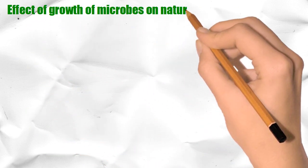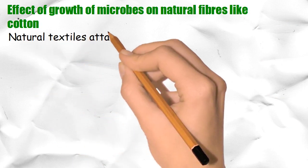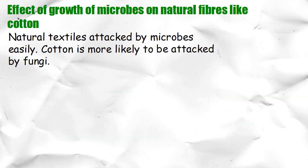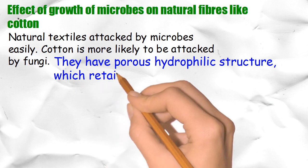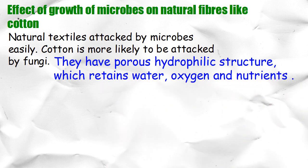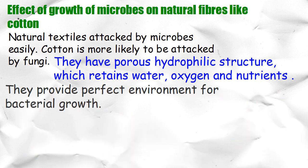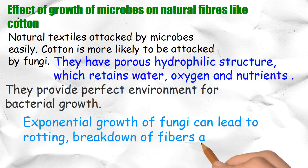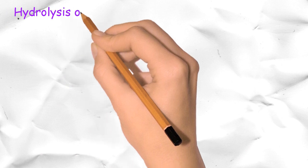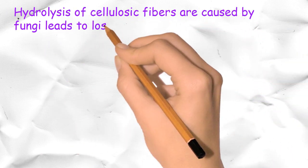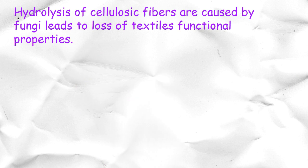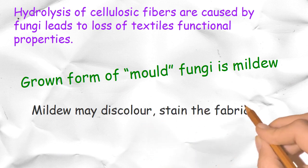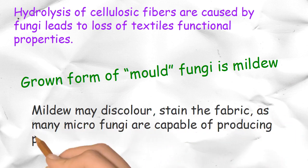Effective growth of microbes on natural fibers like cotton: natural textiles are attacked by microbes easily. Cotton is more likely to be attacked by fungi. Cotton has a coarse hydrophilic structure which retains water, oxygen, and nutrients, providing a perfect environment for bacterial growth. Exponential growth of fungi can lead to rotting, breakdown of fibers, and loss of strength of fabrics. Hydrolysis of cellulosic fibers caused by fungi leads to loss of textile functional properties. The grown form of mold fungi is mildew, which may discolor and stain the fabric, as many micro-fungi are capable of producing pigments.